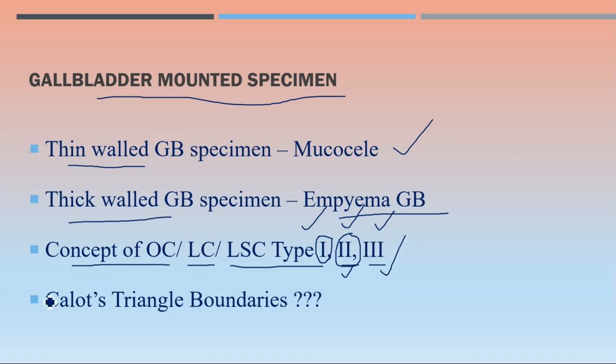A likely next question is: what is Calot's triangle and what are its boundaries? This will definitely be asked if you get a gallbladder specimen.